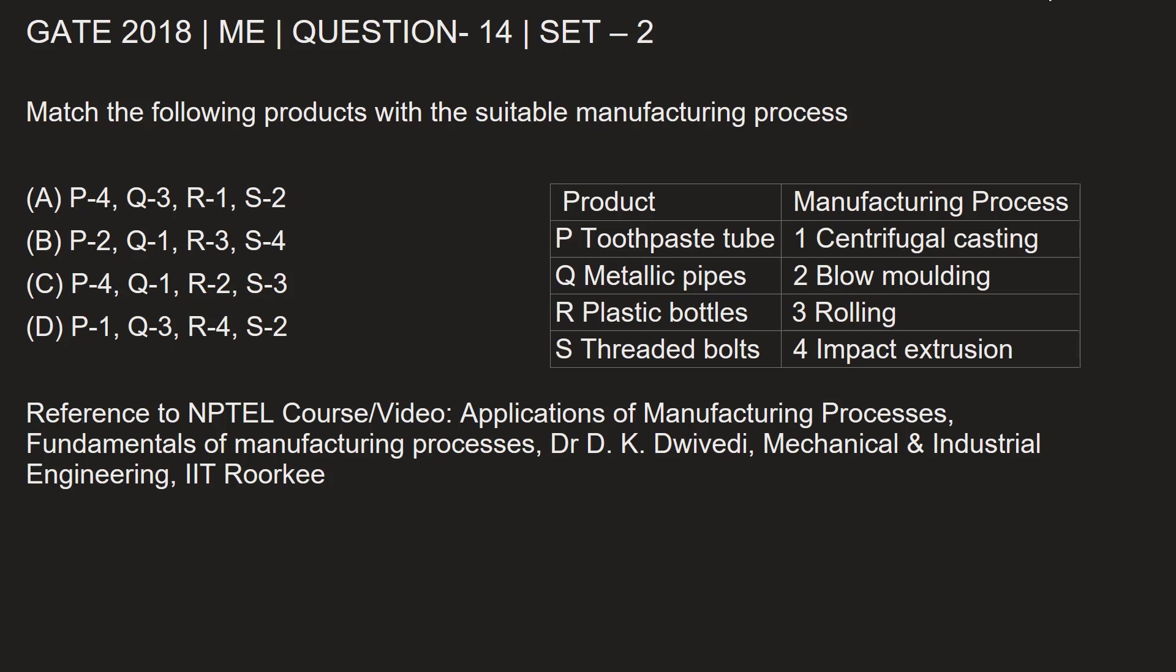In the product category we have toothpaste tube, metallic pipes, plastic bottles, and threaded bolts. In the manufacturing processes we have centrifugal casting, blow molding, rolling, and impact extrusion. Let's match the correct ones.